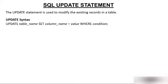The syntax is: UPDATE, then the table name, then SET, then the column name and the value you want to set. For example, UPDATE employee SET mobile_number = new_value WHERE employee_id = condition. The WHERE clause specifies which record to update.